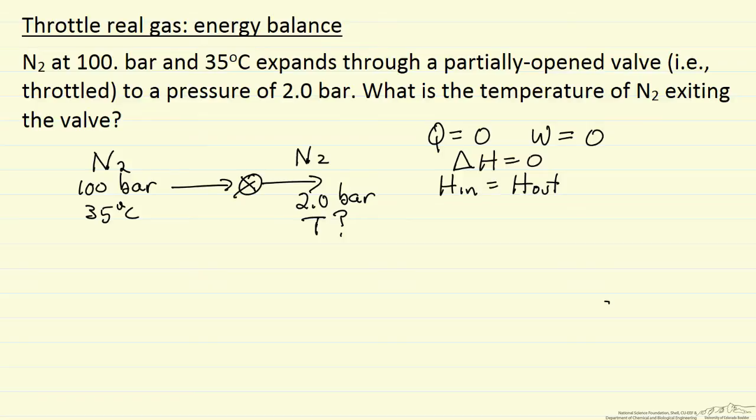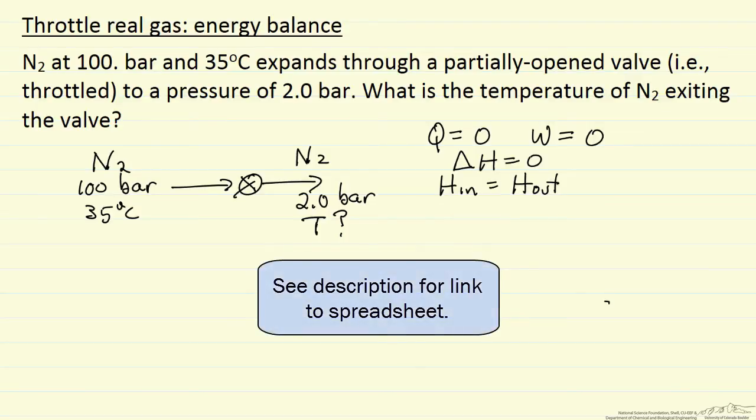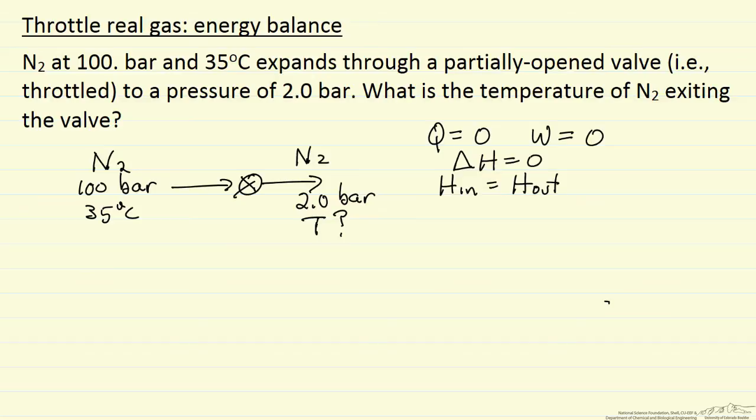What we're going to do to calculate the enthalpy is use the Peng-Robinson equation of state. This is the spreadsheet equation of state from the thermodynamics textbook by Elliott and Lira. Other screencasts explain how to use these spreadsheets, but basically you enter critical pressure, critical temperature, acentric factor, and heat capacities. All this information is in the spreadsheet. You enter it into the appropriate location to calculate enthalpies, and I'm going to give you the values for the enthalpy.